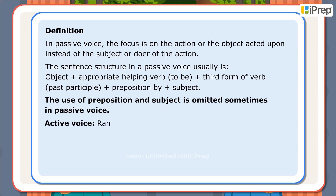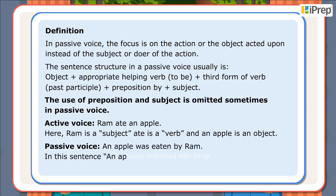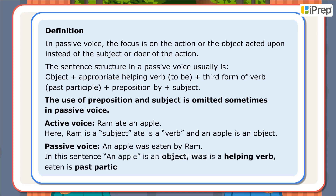Active voice: Ram ate an apple. Here, Ram is the subject, ate is the verb, and an apple is the object. Passive voice: An apple was eaten by Ram. In this sentence, an apple is the object, was is the helping verb, eaten is the past participle, by is the preposition, and Ram is the subject.